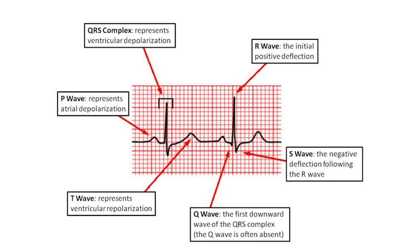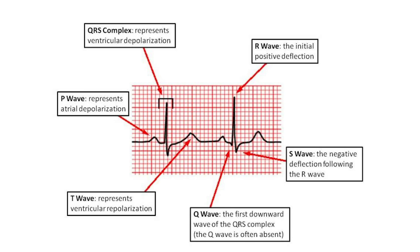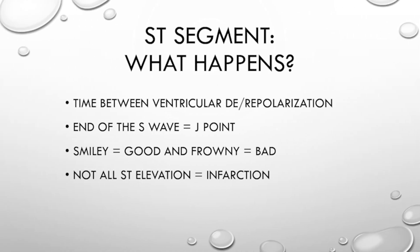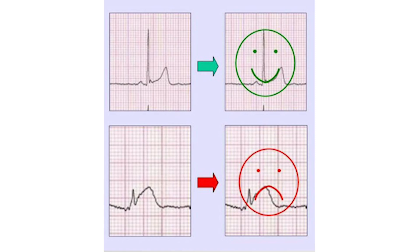Let's get started. Tell us about the EKG. We're all familiar with the basic EKG and the basic waves that go along with it. We have the P-wave, which represents atrial depolarization; the QRS complex, which represents ventricular depolarization; and the T-wave, which represents ventricular repolarization. Today we're going to focus on the ST segment. The ST segment is the time between ventricular depolarization and ventricular repolarization — it's where we can see injury and current infarct. We're going to focus at a point called the J-point, which is the end of the S-wave.